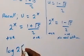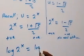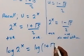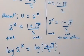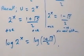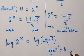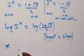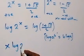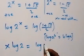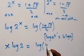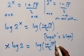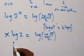So we take the log on both sides: log of 2 raised to power x equals to log of the bracket 1 plus root 5 over 2. Then we apply the power rule of logarithms, where log a raised to power b can be written as b log a. So applying this here gives us x log 2 equals to log of bracket 1 plus root 5 over 2.